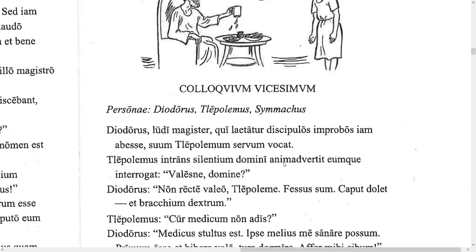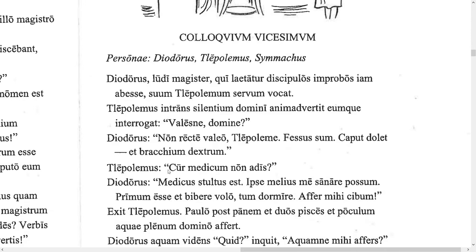Back to the story. Tlepolemus notices the silence of his master and asks him, 'Valesne, domine?' — Are you well, master? Diodorus says, 'Non recte valeo' — I am not really well. Notice 'Tlepoleme' is in the vocative with a short e instead of the us ending. 'Fessus sum' — I am tired. 'Caput dolet' — my head is hurting. 'Et brachium dextrum' — and my right arm is also hurting.